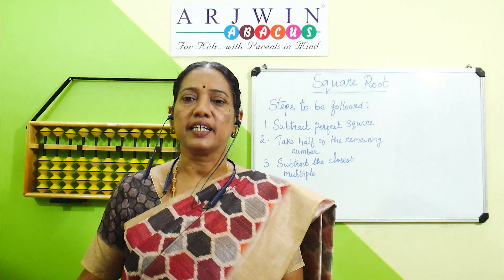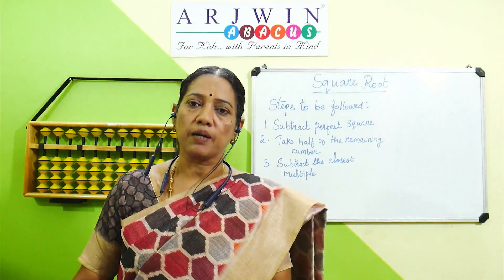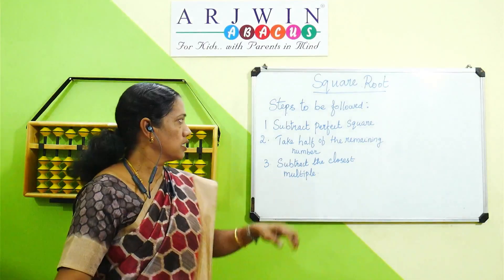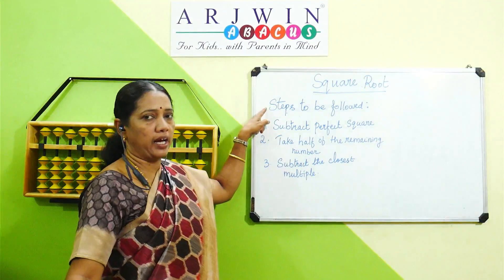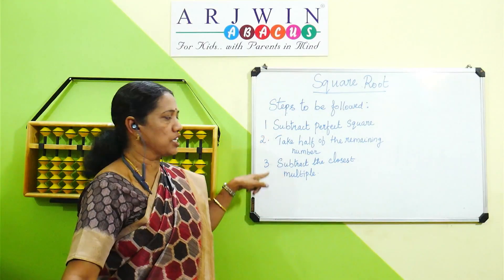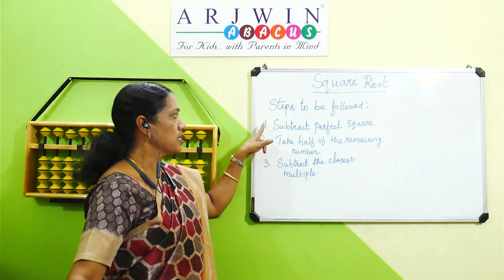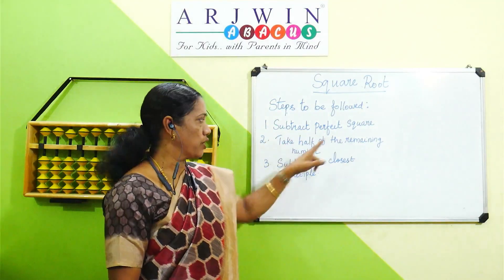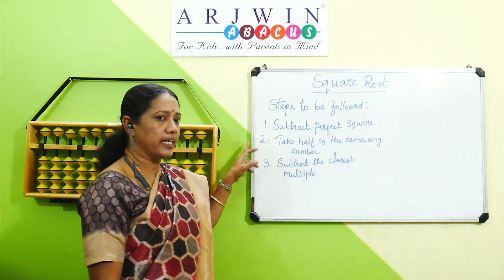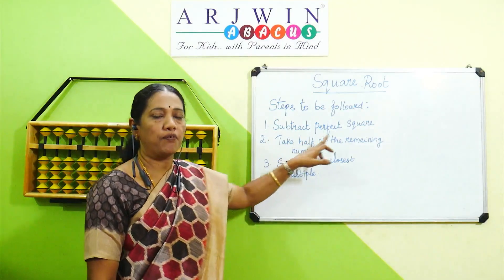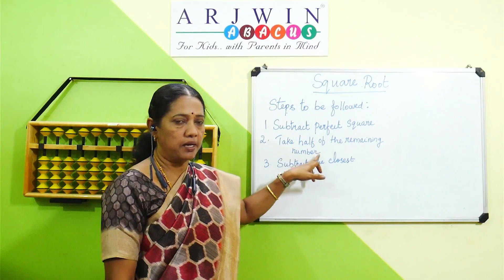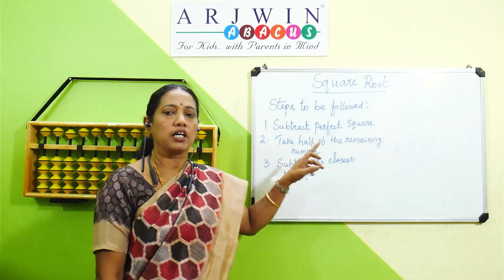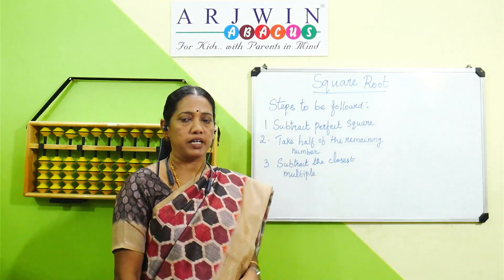Now let us see the steps involved in taking square roots. There are 3 steps. First: subtract the perfect square. Second: take half of the remaining number. Third: subtract the closest multiple.